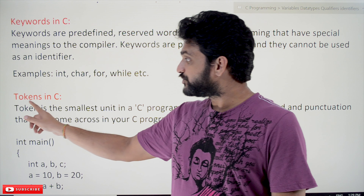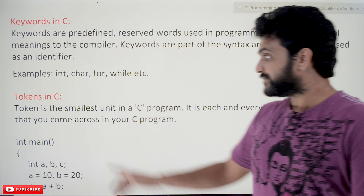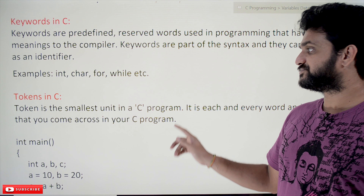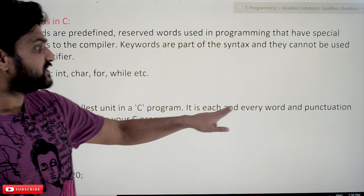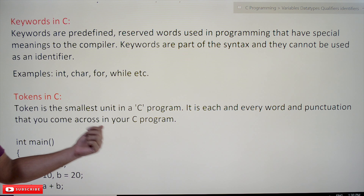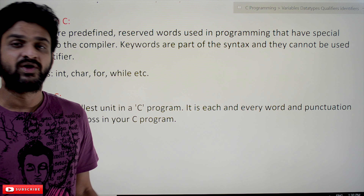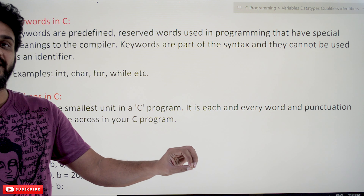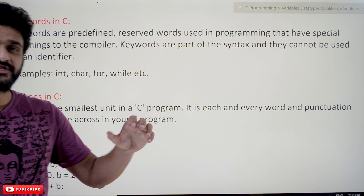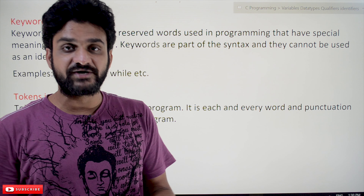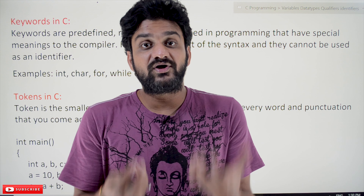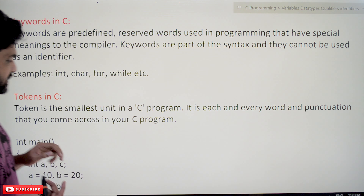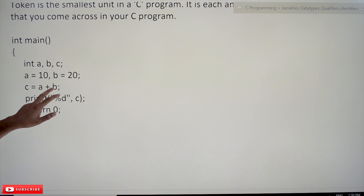Now, what is meant by a token? A token is the smallest unit in a C program. It is each and every word and punctuation that you come across in your C program. Whatever is there in the C program — whether it is a keyword, an identifier, a constant, a string, or a special character — that is what we call a token. Let's consider a program and try to identify the keywords, identifiers, and tokens.